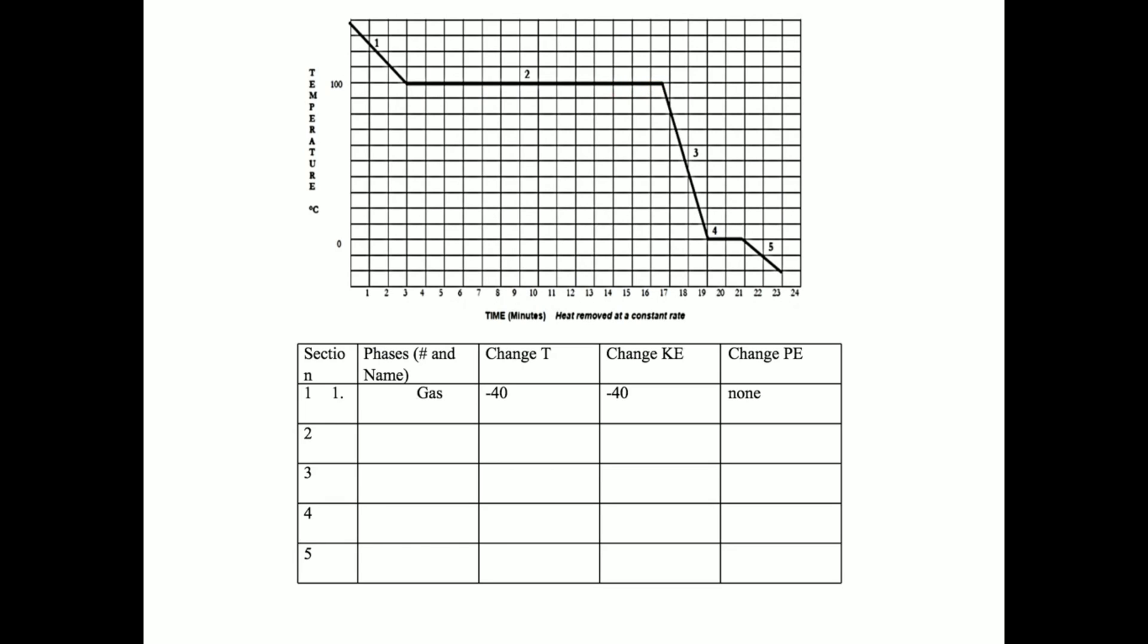In section three, we have only the liquid state. Here, our kinetic energy is decreasing and our potential energy is constant. In section four, we have a plateau. A plateau is a phase change and potential energy change. Here, our potential energy will decrease as we change from the liquid to the solid state. On this plateau, we have both states of matter.